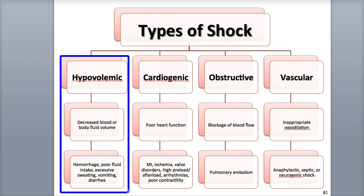Hypovolemic shock is commonly caused by sudden external or internal hemorrhaging, poor fluid intake, or through the loss of body fluids as a result of excessive sweating, vomiting, or diarrhea. As a result of this loss of body fluid volume, venous return to the heart slows down, the heart doesn't fill with as much blood, stroke volume decreases, and there is a decrease in cardiac output. This type of shock is treated by replacing fluid volume as fast as possible.